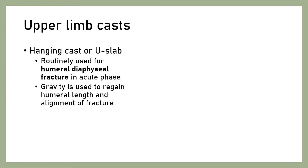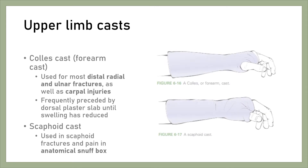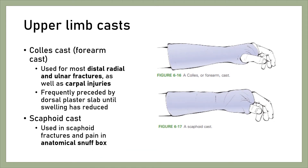Hanging cast or U-slab is routinely used for humeral shaft fractures in the acute phase. Gravity is used to regain humeral length and alignment of fracture. Colles cast or forearm cast is used for most distal radial and ulnar fractures as well as carpal injuries, frequently preceded by a dorsal plaster slab until swelling has reduced. Scaphoid cast is used in scaphoid fractures and pain in the anatomical snuffbox.